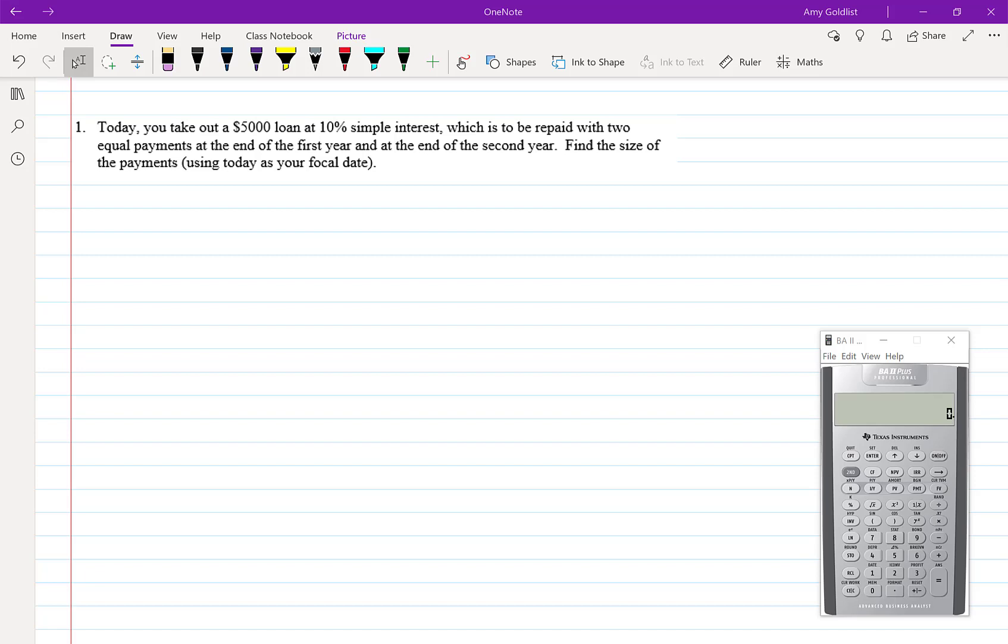Example 1. Today you take out a $5,000 loan at 10% simple interest, which is to be repaid with two equal payments at the end of the first year and at the end of the second year. Find the size of the payments using today as your focal date.